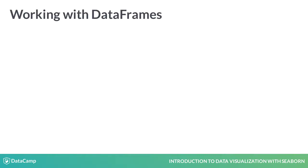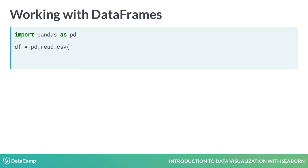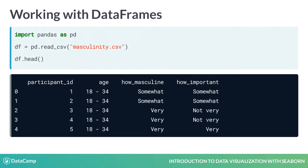First, import the Pandas library as pd. Then use the read_csv function to read the CSV file named masculinity.csv and create a Pandas DataFrame called DF. Calling head on the DataFrame will show us its first five rows.